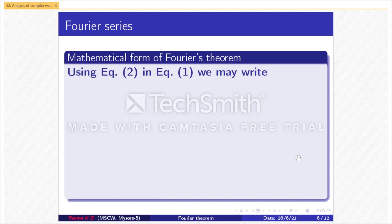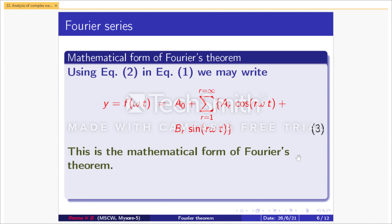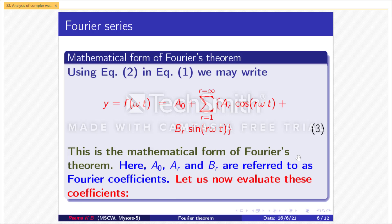Using equation 2 in equation 1, we may write y = f(ωt) = a₀ + Σ(r=1 to ∞) [aᵣcos(rωt) + bᵣsin(rωt)]. Let us consider this as equation 3. This is the mathematical form of Fourier's theorem. Here a₀, aᵣ, and bᵣ are referred to as Fourier coefficients. Let us now evaluate these coefficients.